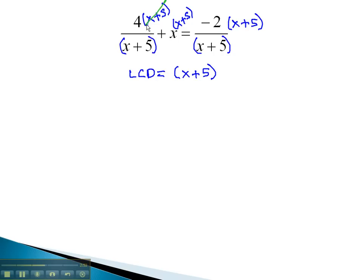When we do this, the x plus 5's will divide out in the fractions, and we're just left with 4 plus x times x plus 5 equals negative 2. We now have an equation we can solve by first distributing the x. 4 plus x squared plus 5x equals negative 2.